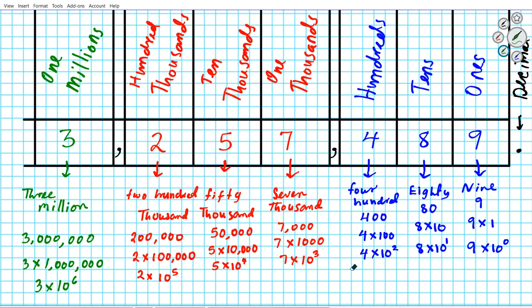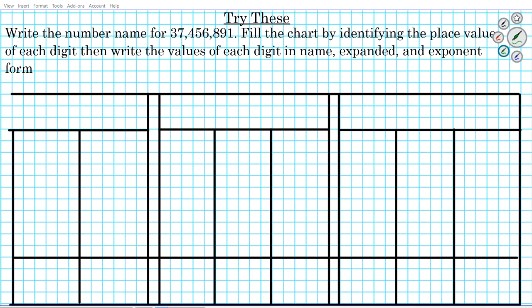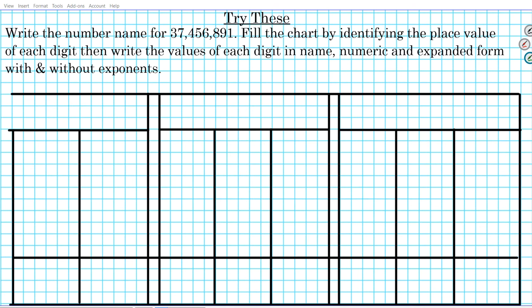It is now your turn to go ahead and try the practice problem. Remember, if there's anything you do not understand, feel free to ask your teacher or post a question in the comment section below and we'll be more than glad to support you. For this practice problem, you have to write the number name for 37,456,891, fill the chart, identify the place value of each digit, then write the values in name, numeric, and expanded form with and without exponents. Go ahead and pause the video at this time and solve the problem completely.